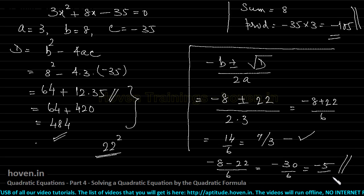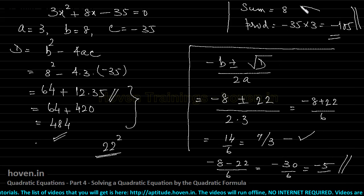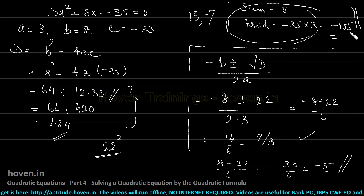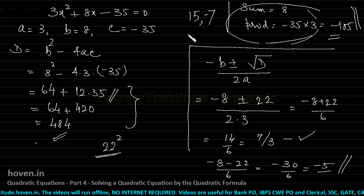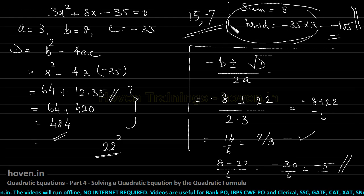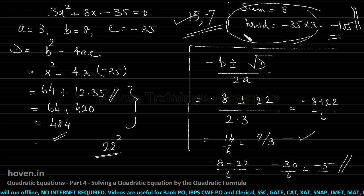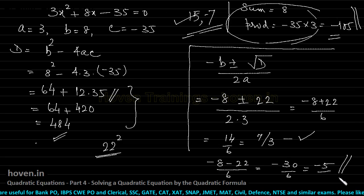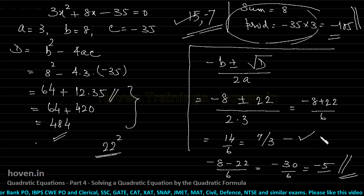This is how we use the quadratic formula. For those curious, the two numbers for the shortcut would have been 15 and -7, whose product is -105 and sum is 8. If you had that luck, the shortcut would have been lightning fast — but if you are pressed for time, the quadratic formula will lead you to the solution reliably.